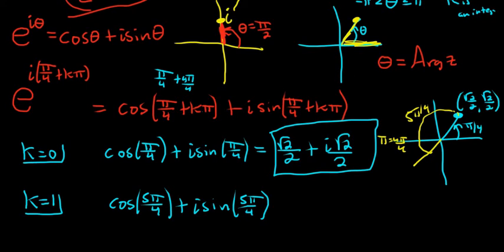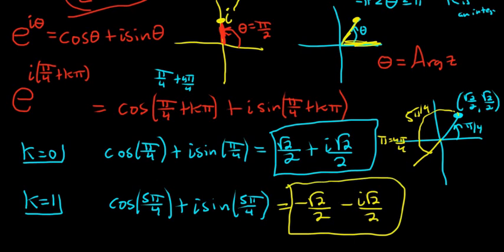That's where cosine and sine are both negative. Cosine is the x coordinate, sine is the y coordinate. So this is going to be negative root 2 over 2 minus i root 2 over 2. And now you can see graphically that that's it. If I add 2 pi, I'm going to go all the way back around. If you subtract pi, you get this answer here. So these are the two values of the square root of i.